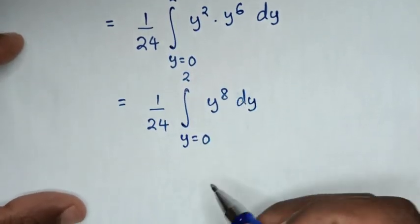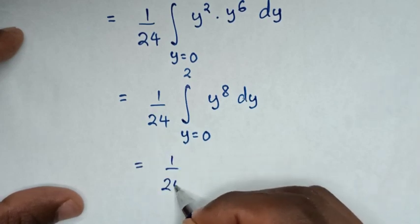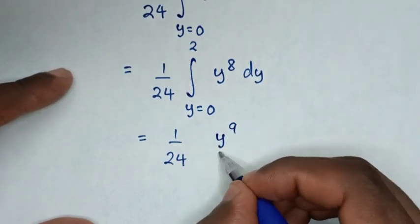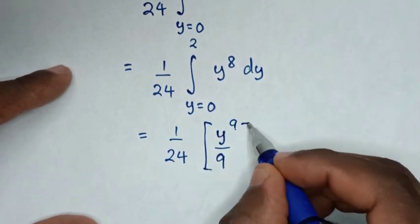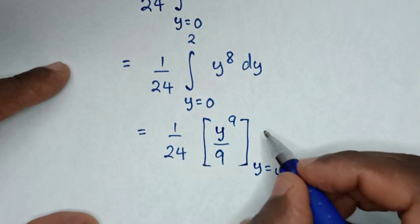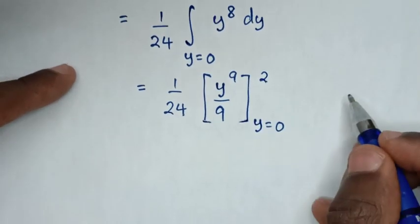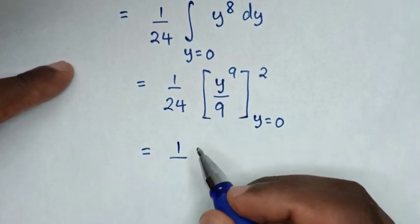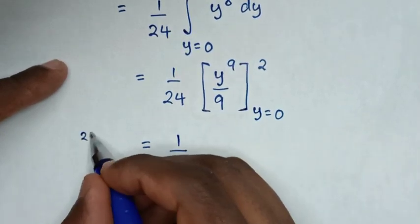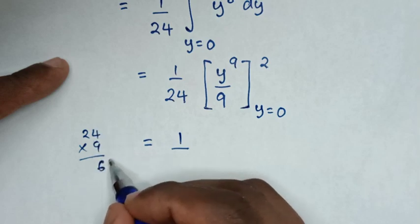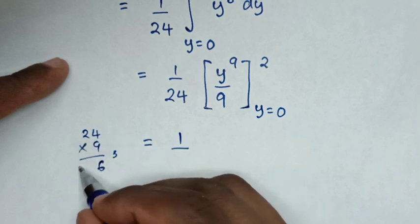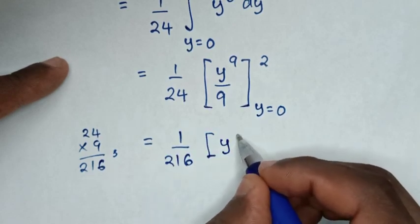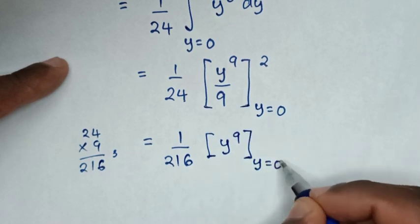Then we'll integrate y⁸ with respect to y. So it will be equal to 1/24, then y⁸ becomes y⁹ over 9, with the limit from y equals 0 up to 2. Then taking 1/9 outside: 1 over 24 times 9 equals 1/216, with y⁹ evaluated from y equals 0 up to 2.